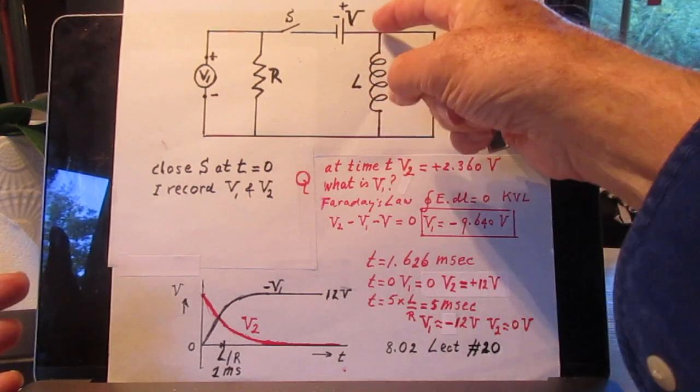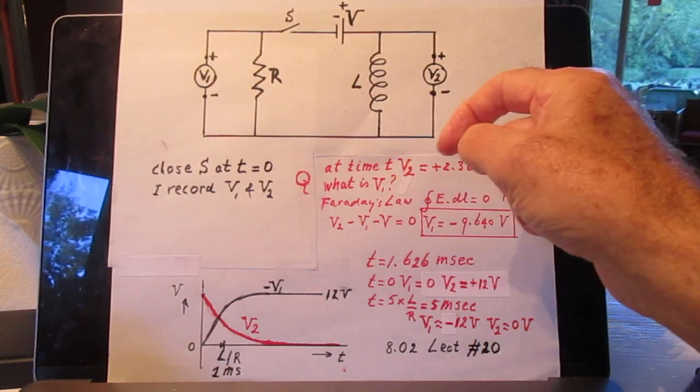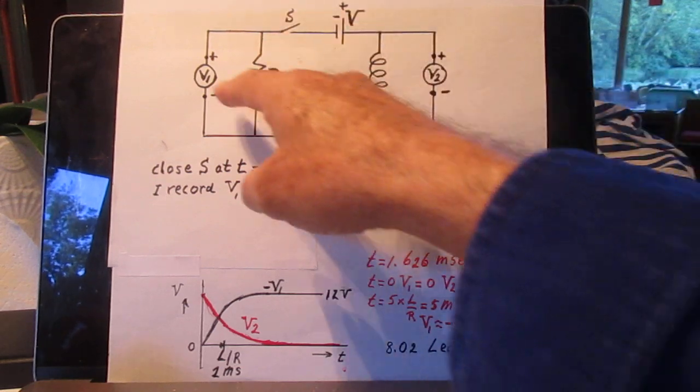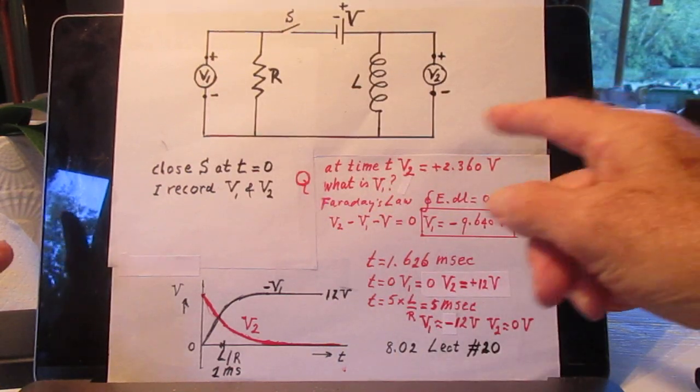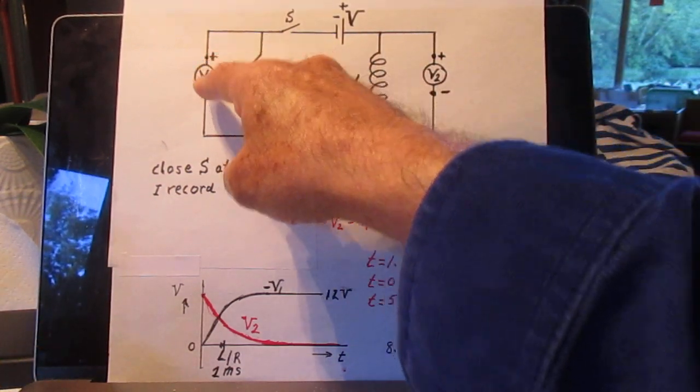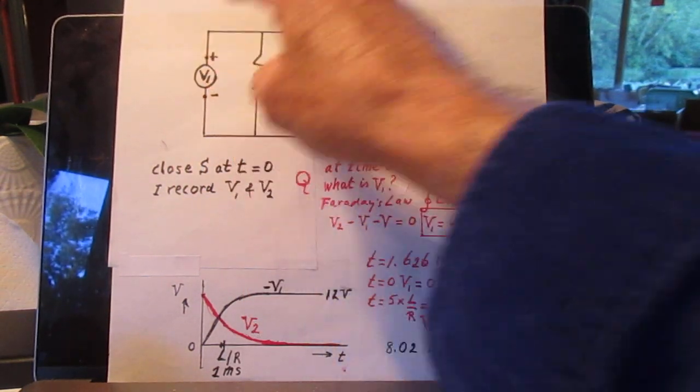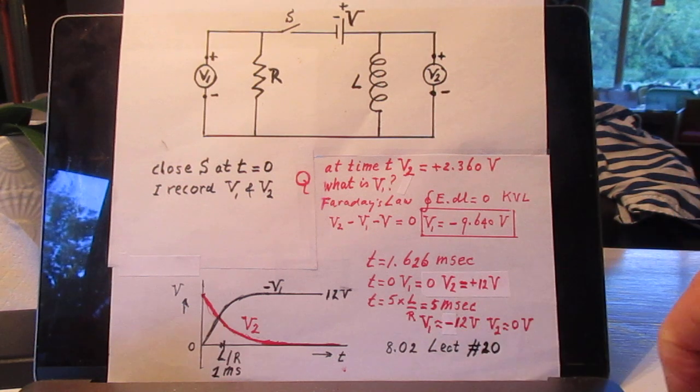There is no potential difference between here and here. The current flows through this R, 1.2 amperes. So, V1 must then be 12 volts if this were plus and this were minus. But since this is minus and this is plus, V1 will be minus 12 volts.